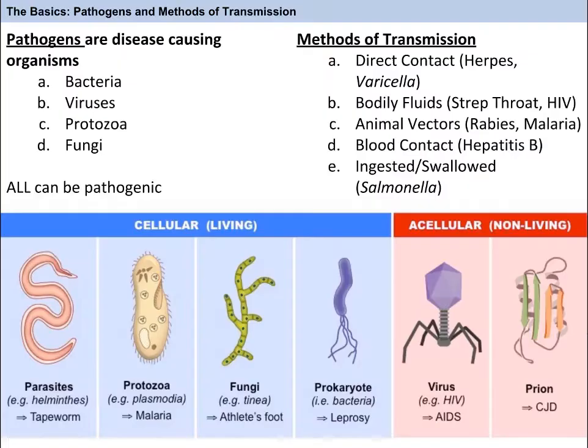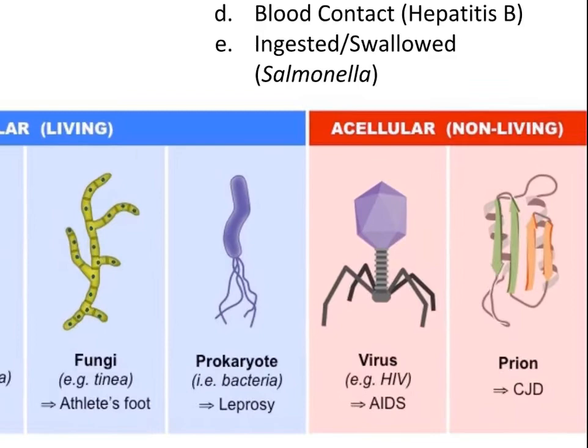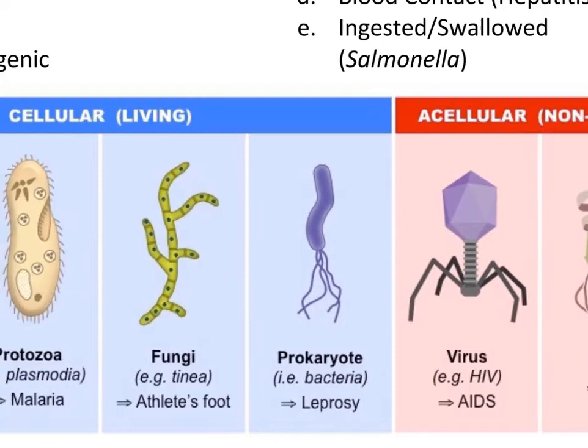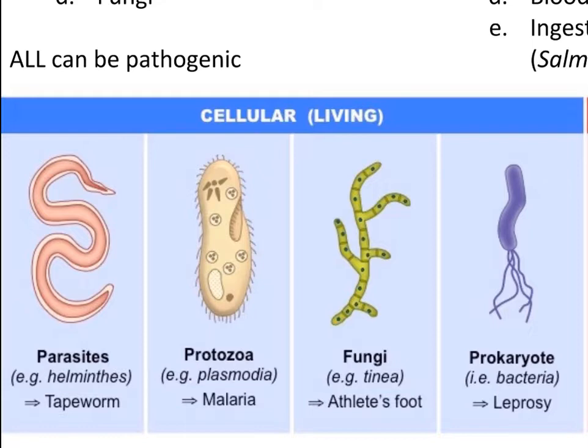Let's throw down a few basics before we get into the mix too much. First, we shall discuss pathogens and the methods of transmission. A pathogen is any organism that causes a disease or infection. Simply stated, pathogens can be bacteria, viruses, protozoa, or fungi. You will also see the term prokaryote tossed around with bacteria, because prokaryotes are the specific types of cells. Remember from evolution that all bacteria have prokaryotic cells, and eukarya, including animals and humans, have eukaryotic cells.